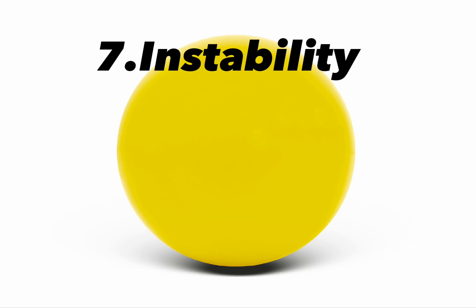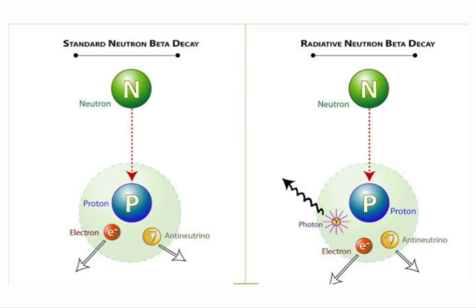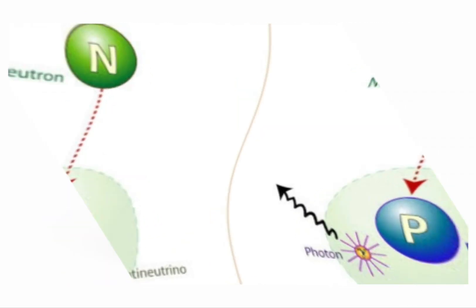7. Instability when isolated. Neutrons are unstable when isolated outside the atomic nucleus. If a neutron is not part of an atomic nucleus, it will undergo beta decay in approximately 14 minutes, transforming into a proton, an electron, beta particle, and an antineutrino.